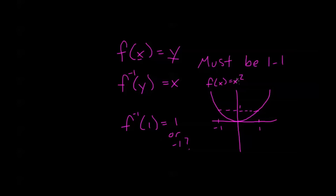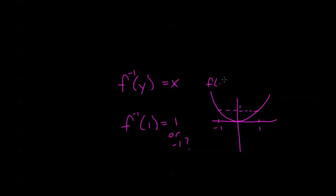It turns out x squared doesn't have an exact inverse. It has two inverses: one is positive square root of x, and the other is negative square root of x. So for us to talk about one distinct inverse function, we have to have a 1 to 1 function. Now this causes a little bit of trouble with our trig functions, and let me remind you why.